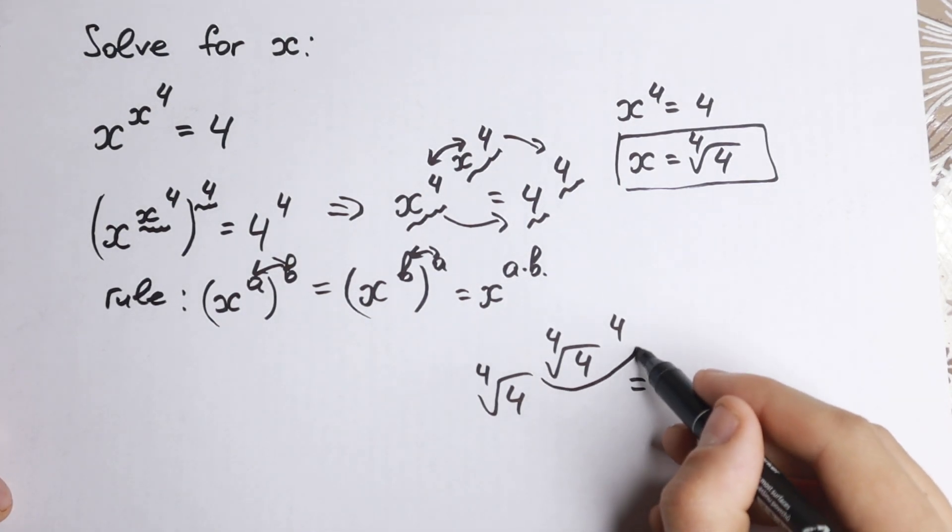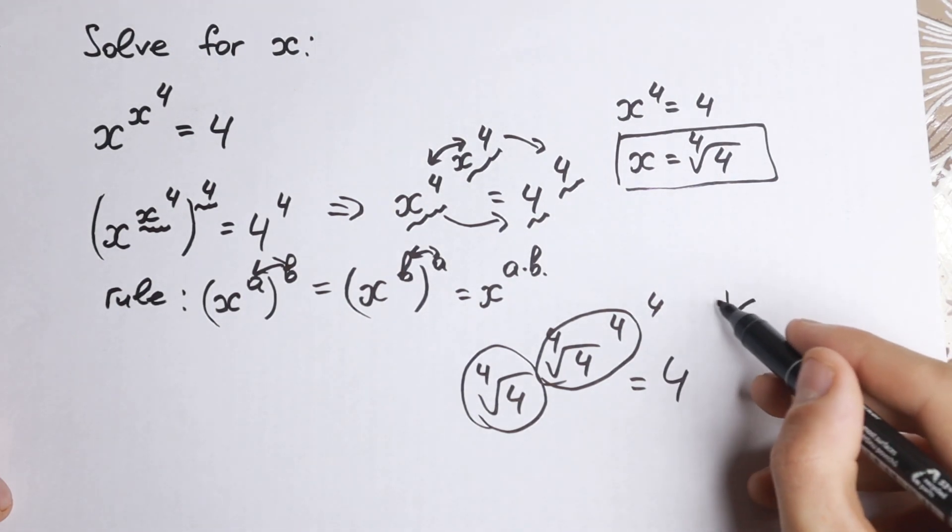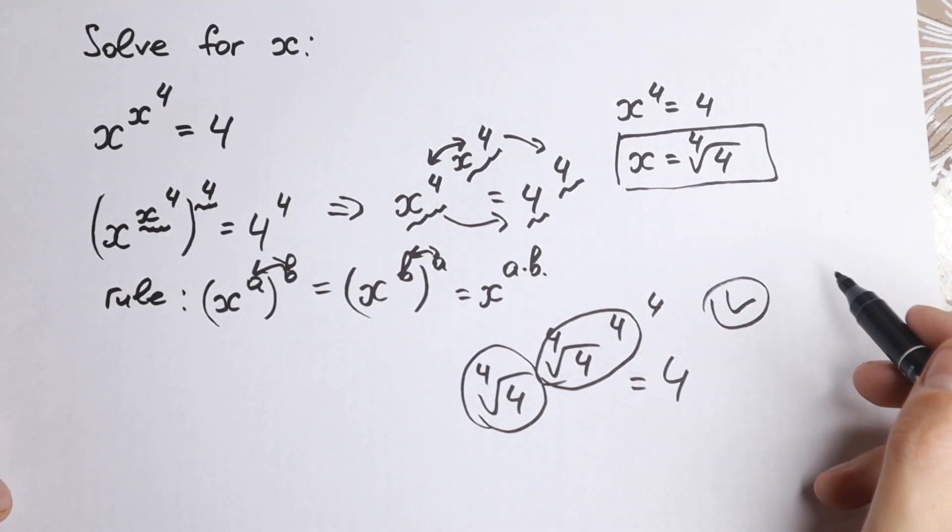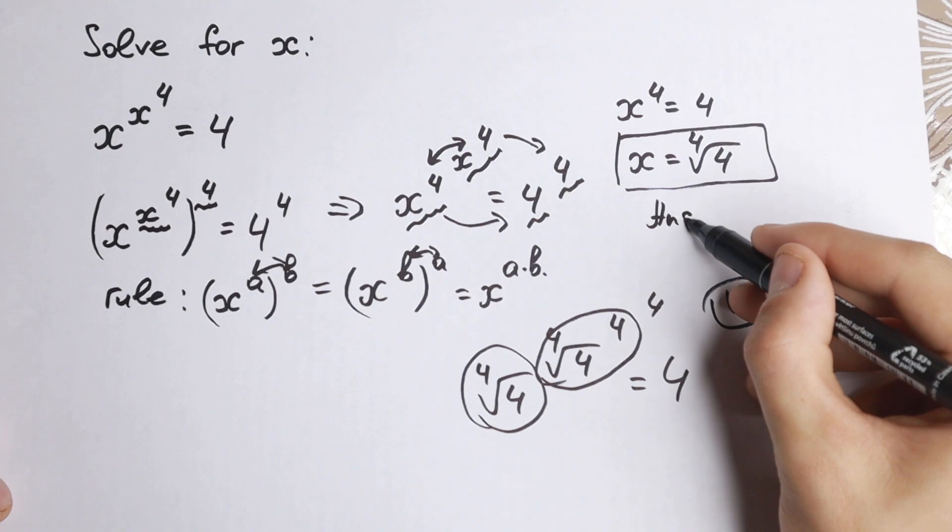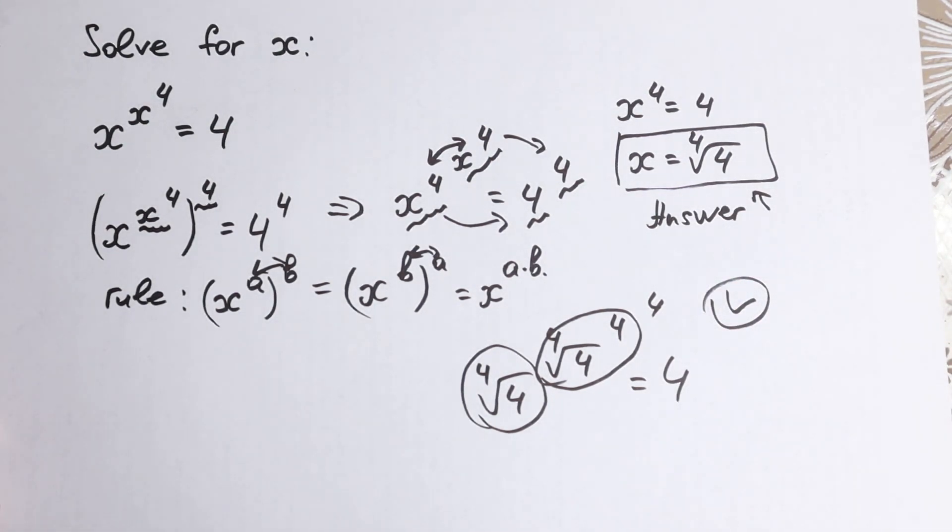If we raise this, we will have four. And if we raise this four to this one, we will have four. This root is good for us. So our answer is x equals the fourth root of four.